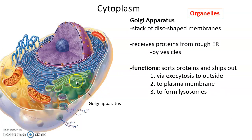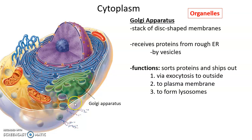The Golgi apparatus is a stack of membrane discs, sort of like a stack of pancakes. The membranes are also made of phospholipid bilayers, similar structurally to the plasma membrane. Proteins made in the rough ER arrive at the Golgi apparatus via vesicles. Within the Golgi apparatus, those proteins are sorted, modified, and shipped out — it acts sort of like a post office. Proteins can be sent out via exocytosis or sent to the plasma membrane.